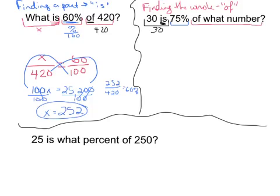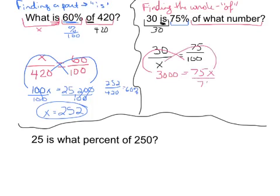So, I set it up, 'is over of'. So, 30 out of the unknown value of x will equal 75 out of 100. I can go ahead and do my proportions. 100 times 30 is basically 3000 equals 75x divided by 75 on both sides.